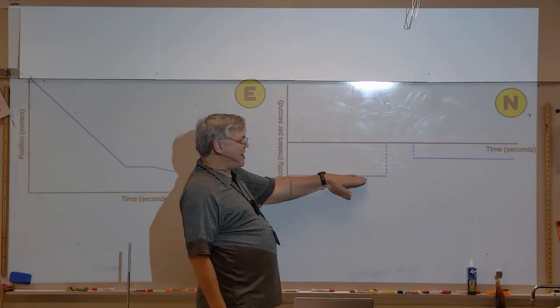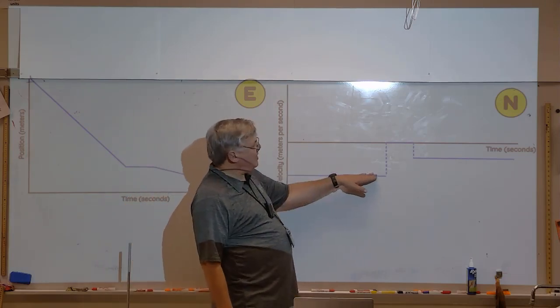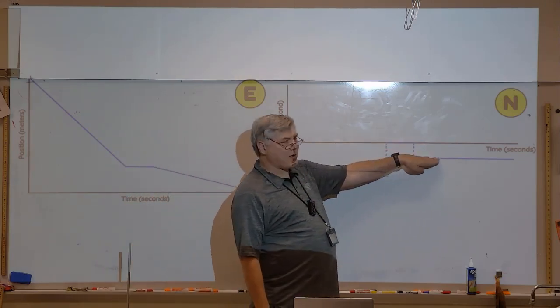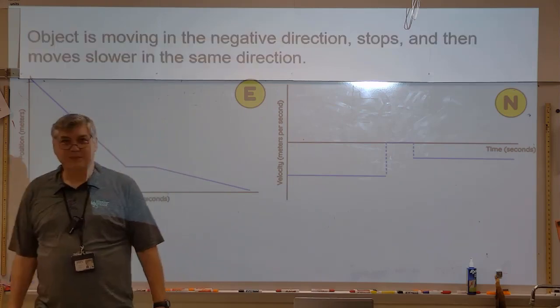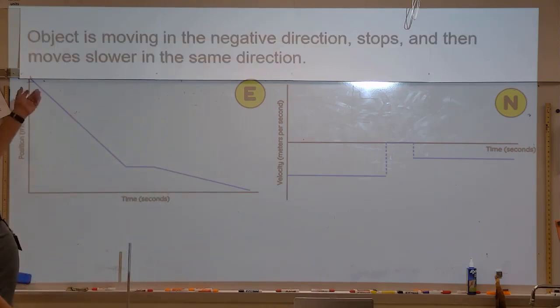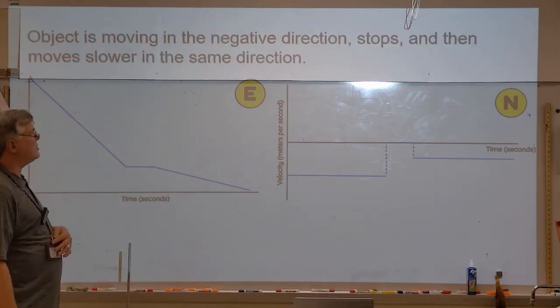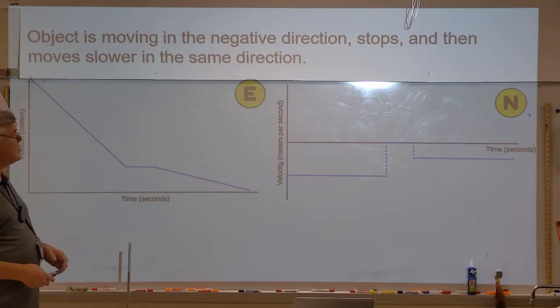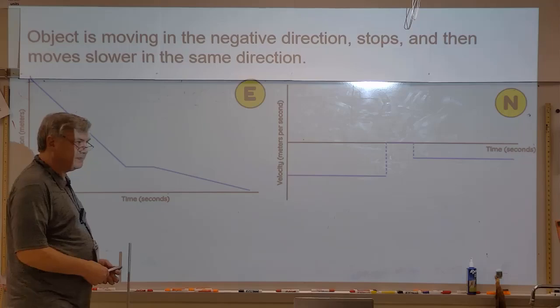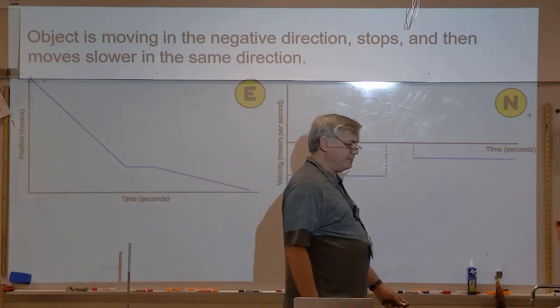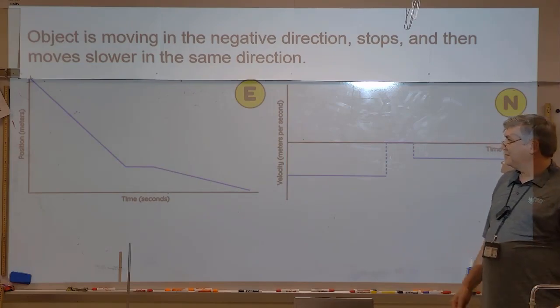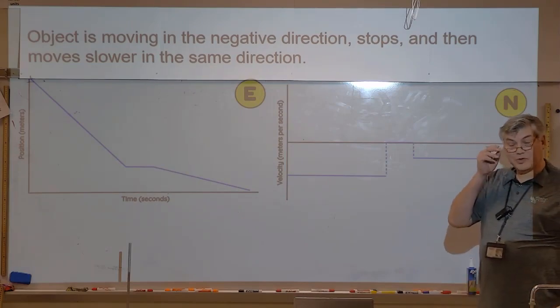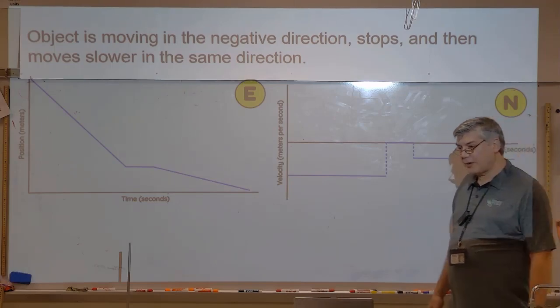We're going backwards slowly, quickly, and then stop, and then backwards slowly. So the description would be something like, object is moving in the negative direction, stops, and then moves slower in the same direction. If you struggled with this one, you probably want to have a little sketch.